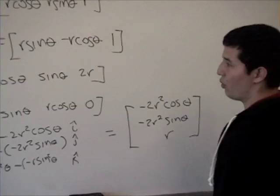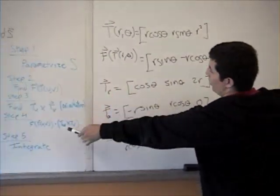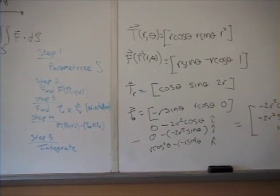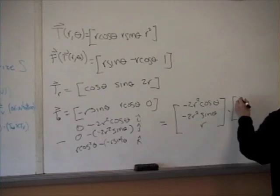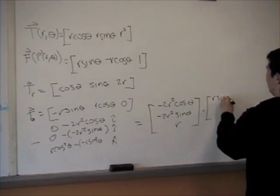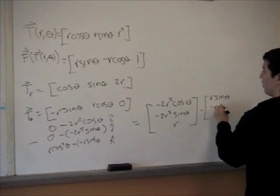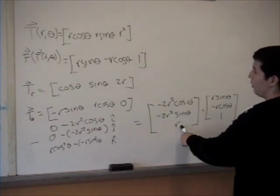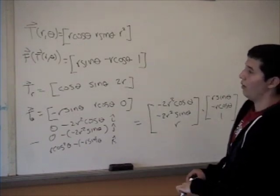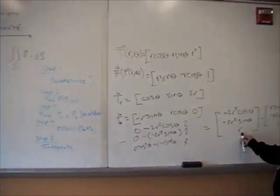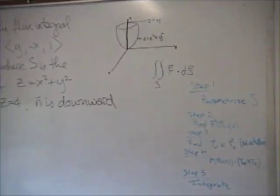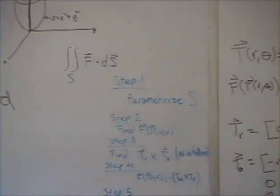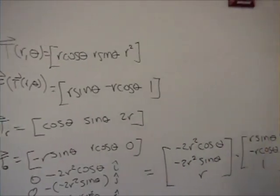And so our next step is just to cross it with the previous vector we found. Now we need to check that our orientation is correct, and we see that this one is positive, and our vector has to be pointing downward, so we have to remember when setting up the integral to put a negative sign outside the integral.